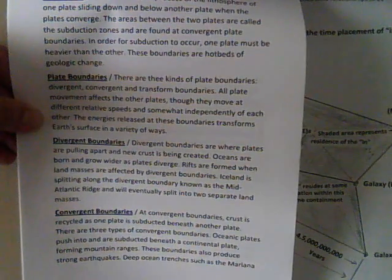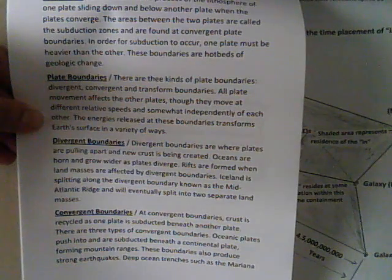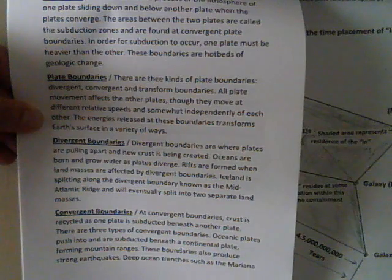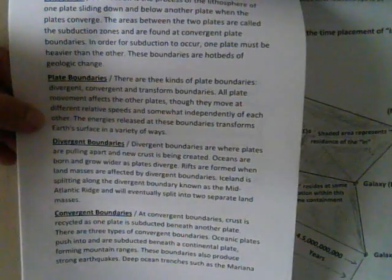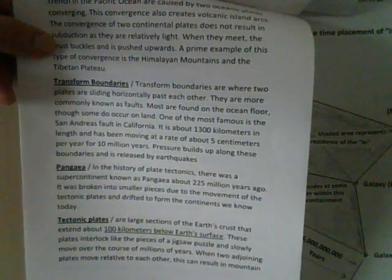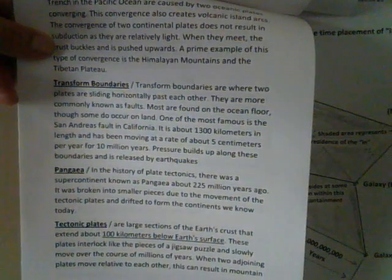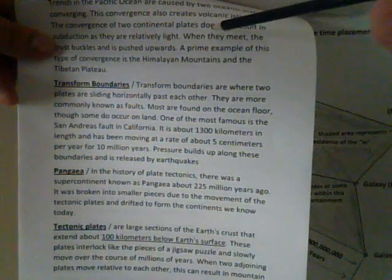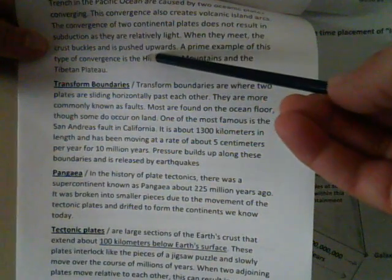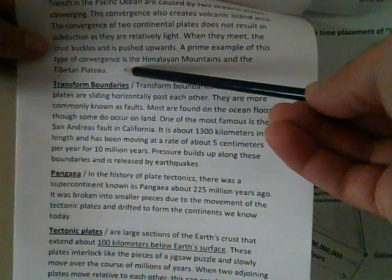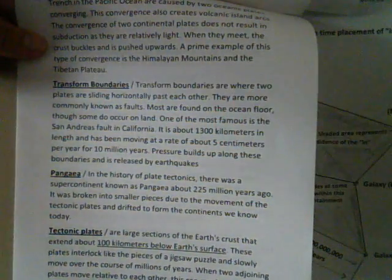At convergent boundaries, crust is recycled as one plate is subducted beneath the other plate. There are three types of convergent boundaries. Oceanic plates push into and are subducted beneath the continental plate, forming mountain ranges — these boundaries also produce strong earthquakes. Deep ocean trenches such as the Mariana Trench in the Pacific Ocean are caused by two oceanic plates converging, and this convergence also creates volcanic island arcs. The convergence of two continental plates does not result in subduction as they are relatively light. When they meet, the crust buckles and is pushed upwards — a prime example being the Himalayan mountains and the Tibetan plateau, the highest mountains in the world.